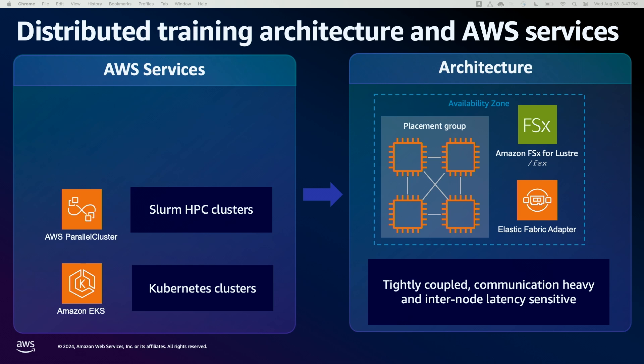Typical distributed training architectures on AWS are made up of tightly coupled clusters of EC2 instances called ultra clusters. AWS Parallel Cluster simplifies the creation and management of Slurm-based HPC clusters on AWS, and Amazon EKS, a managed Kubernetes service, allows you to deploy Kubernetes-based training clusters on AWS. Both support EFA networking out of the box for low-latency, high-throughput interconnect communication and integration with the high-performance file system FSx for Lustre.